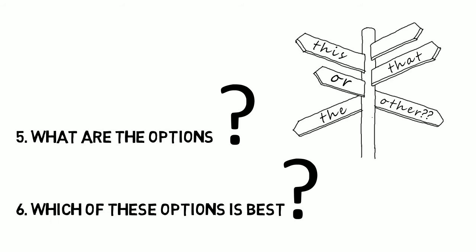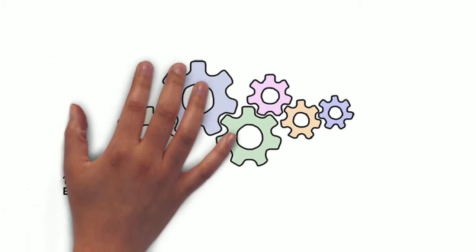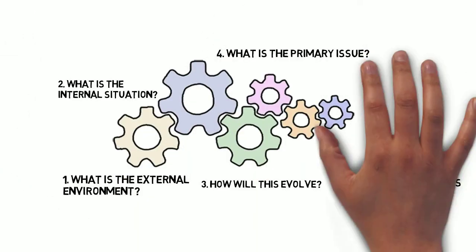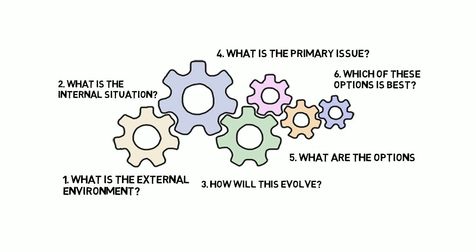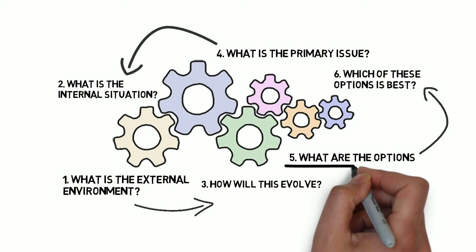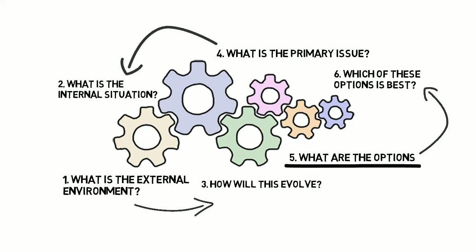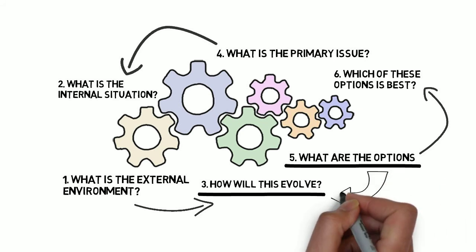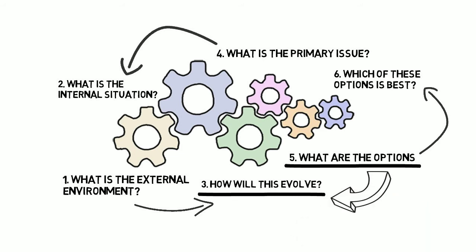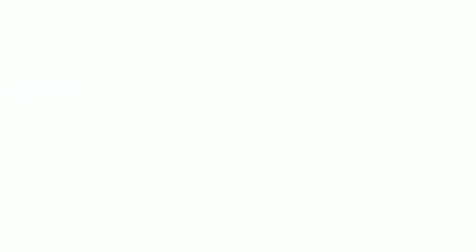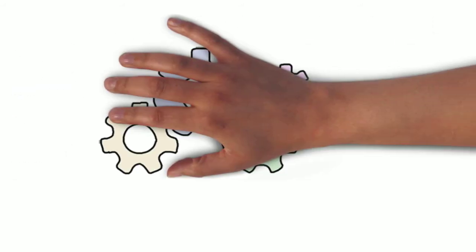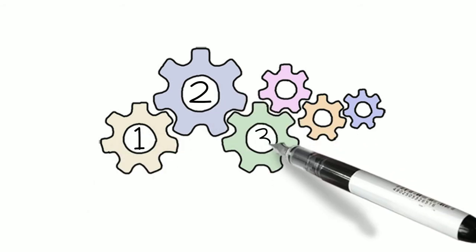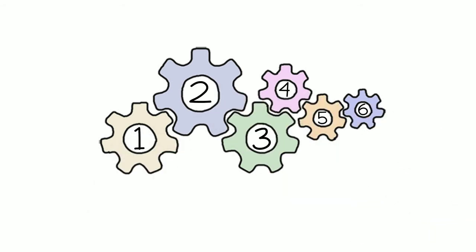The six questions framework describes an ideal way to talk through a strategy, but in reality, discussions about strategy often bounce around from question to question. For example, a discussion of options might lead to a debate about how the market is going to evolve. And that is why I show these questions as cogs. Debating one question often leads to the discussion of another.